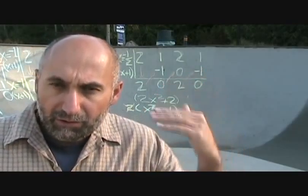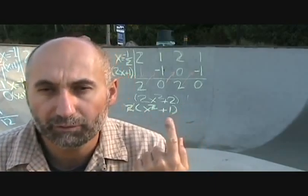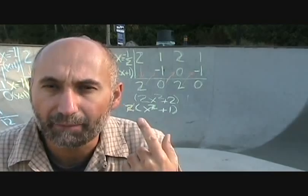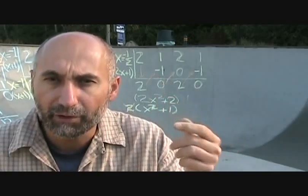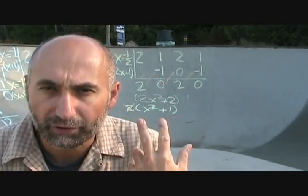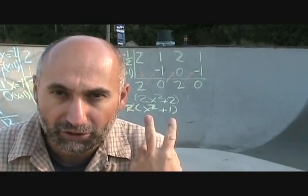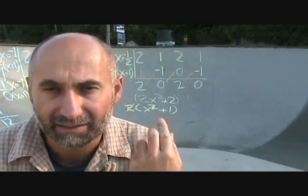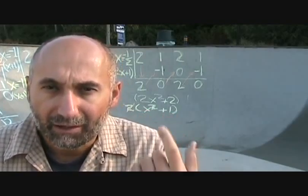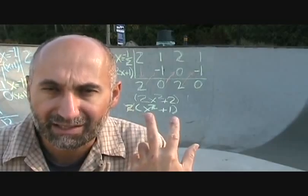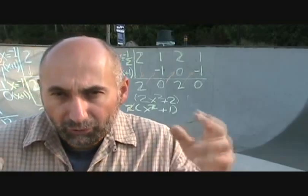We've gotten down to x² + 1. You could try the quadratic formula, but the discriminant is going to be negative, so it can't be factored further. Also remember, we can factor a difference of two squares, but two things added together cannot be factored — and this is a sum, so x² + 1 is irreducible.